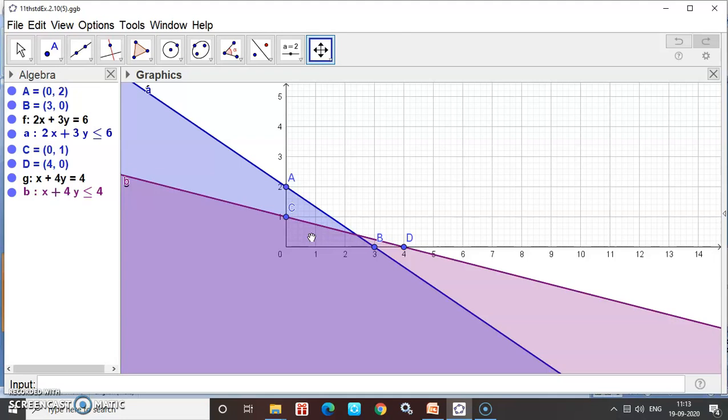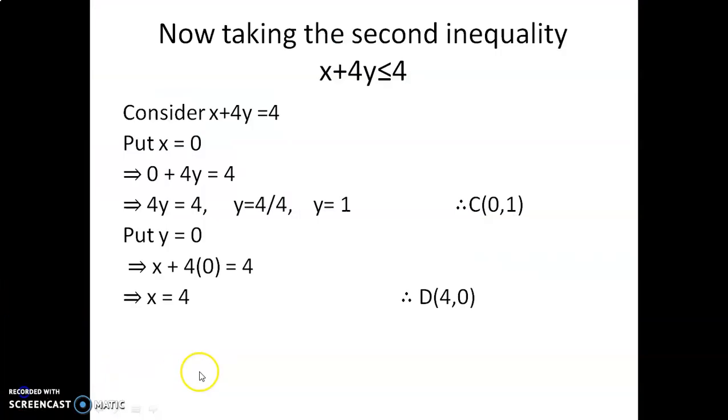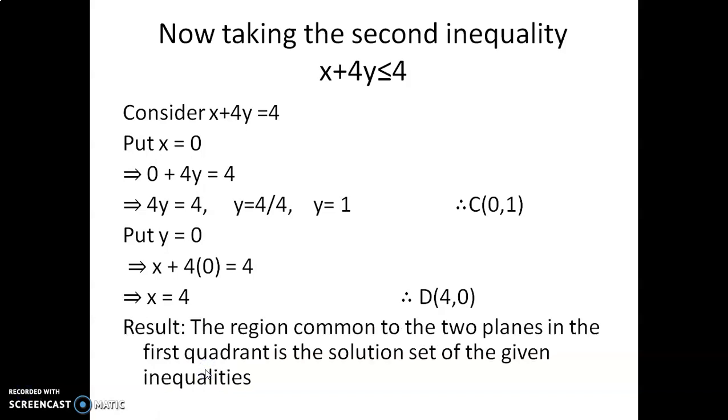Finally, how to write the answer. The region common to the two planes in the first quadrant is the solution set of the given inequalities. Thank you.